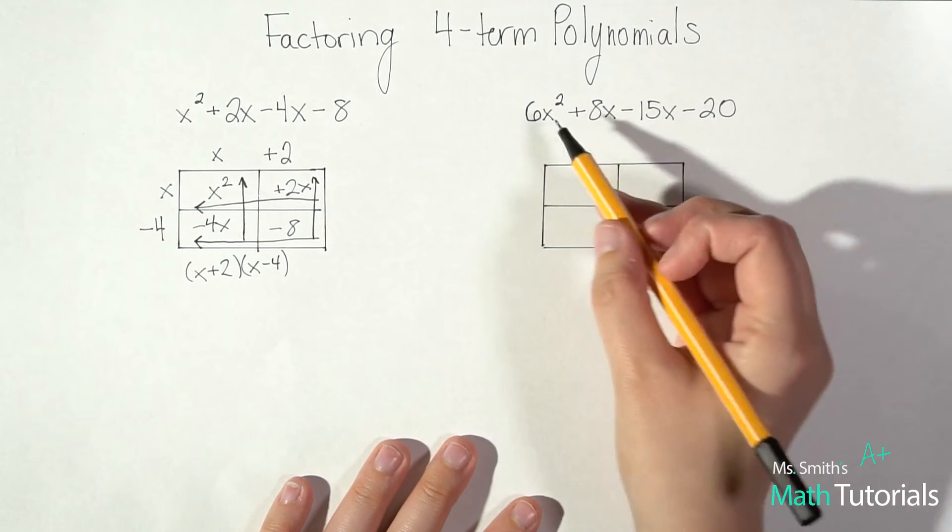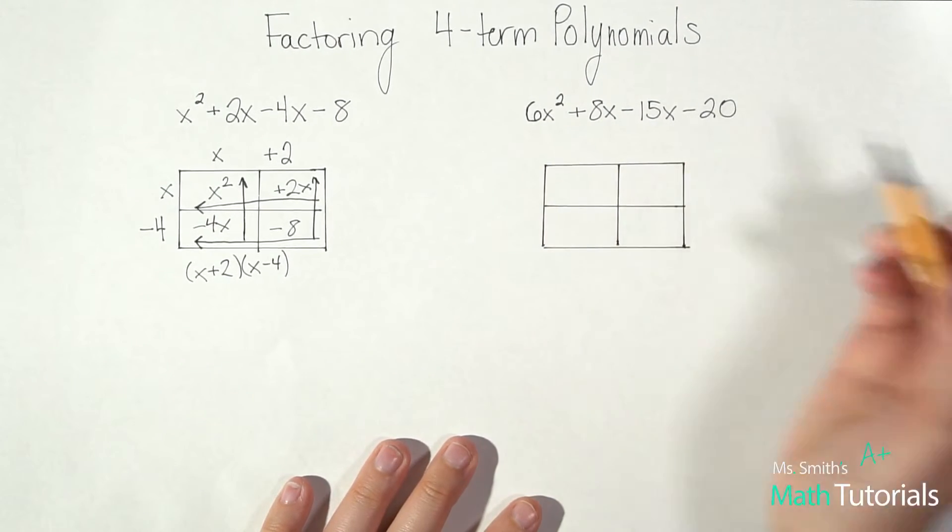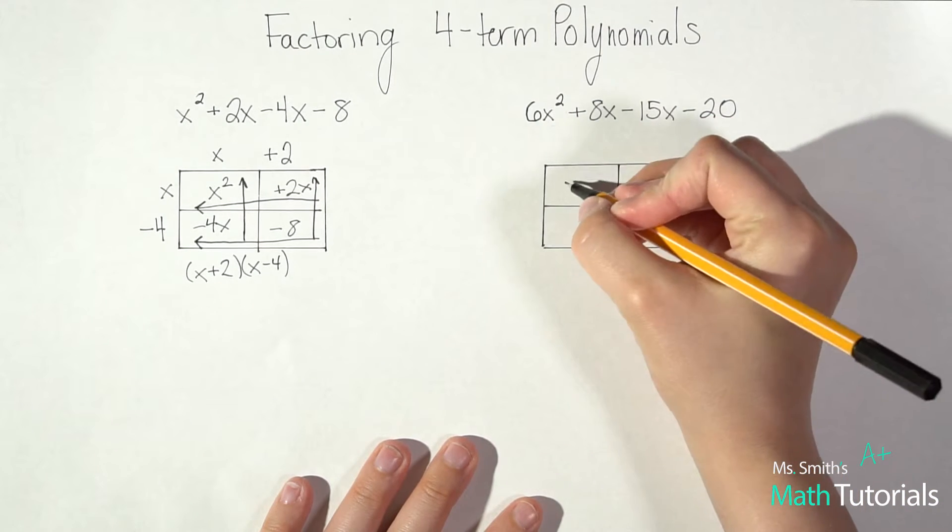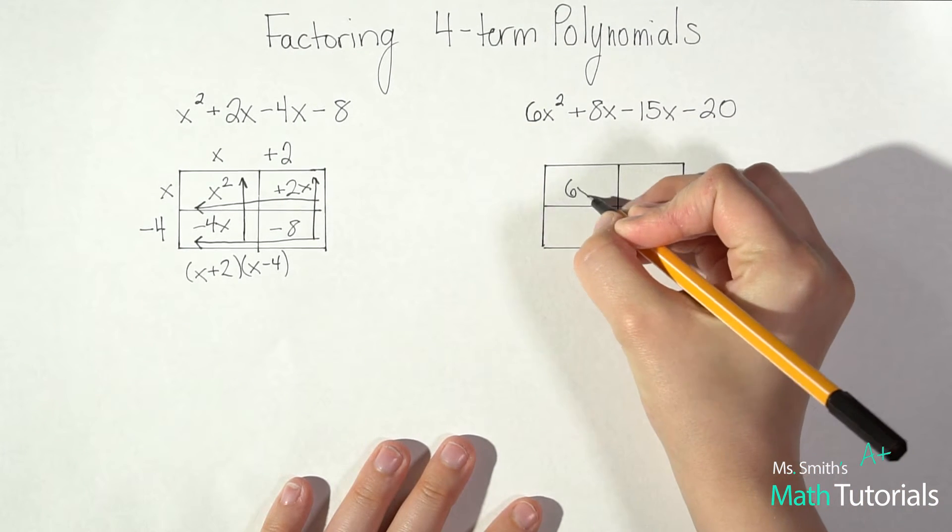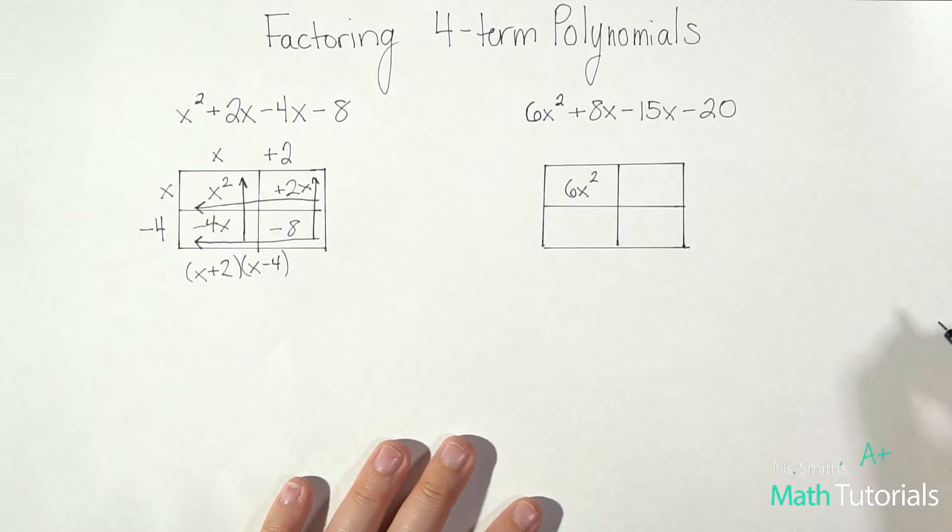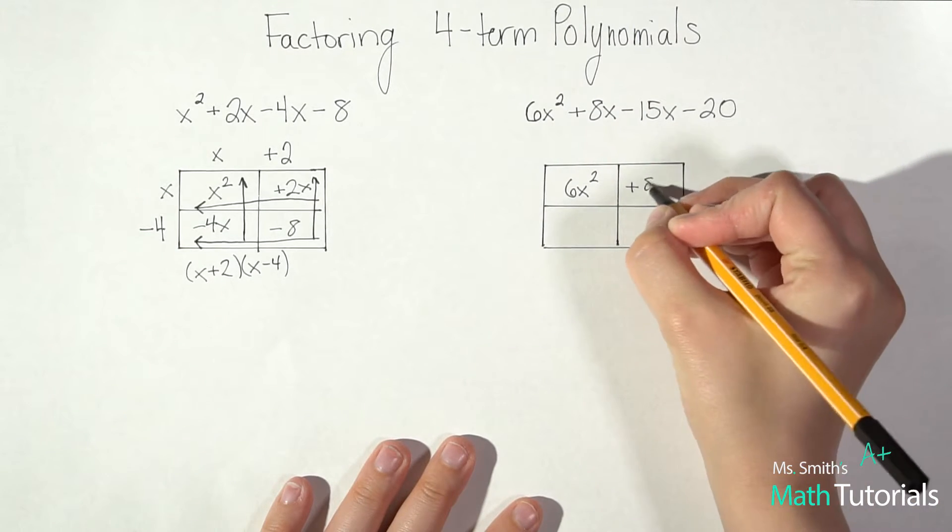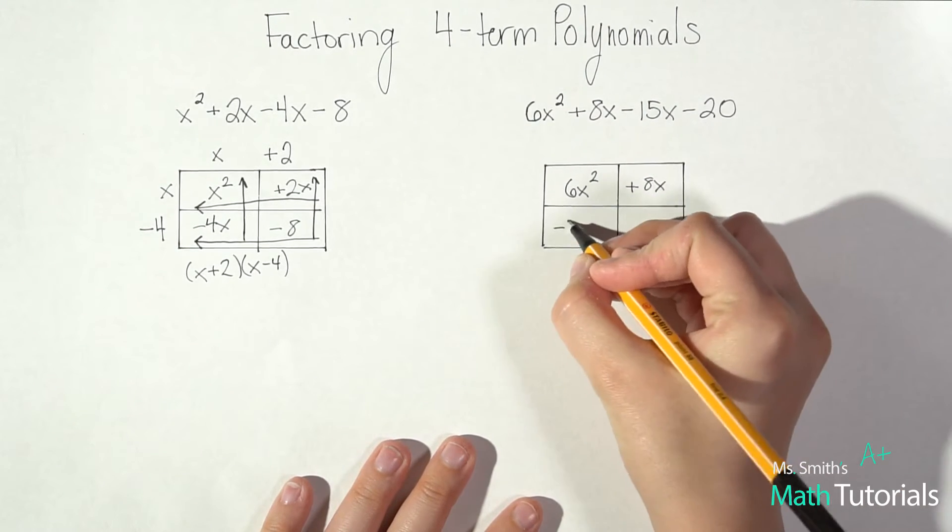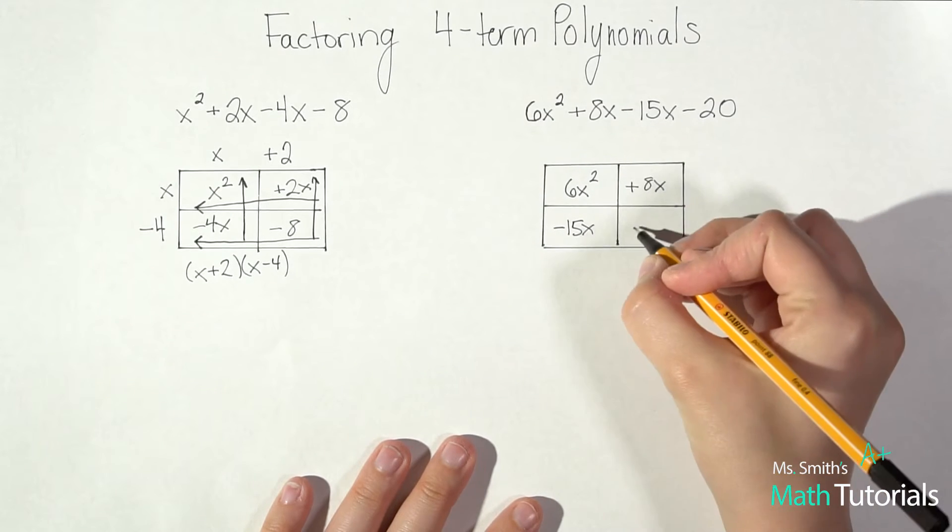Okay, so moving on over here I again have a 1, 2, 3, 4 term polynomial. So I'm going to put the first term in the box, second term, third term, and fourth term.